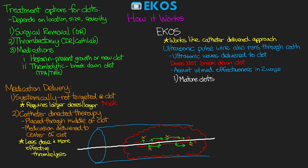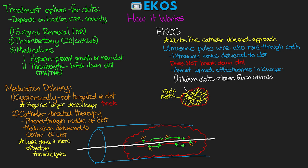First, on mature clots there is a fibrin matrix that forms in and around the clot to keep it from breaking apart and to help with its stability. In mature clots, this matrix is very developed and tightly wrapped around the clot, making it hard for medications to penetrate. What they found is that with the use of ultrasonic waves, these actually work to loosen up those fibrin strands and sort of pop open the clot, allowing more passageways to open throughout it and more spaces for the drug to work its way in.